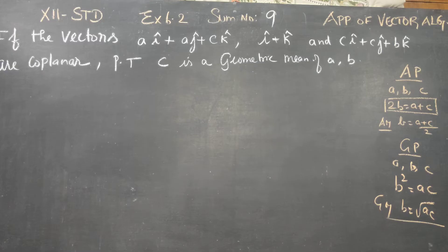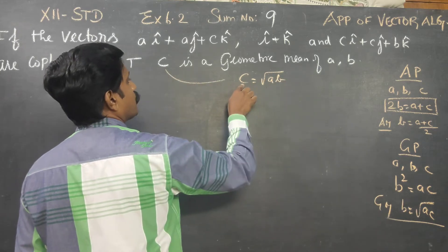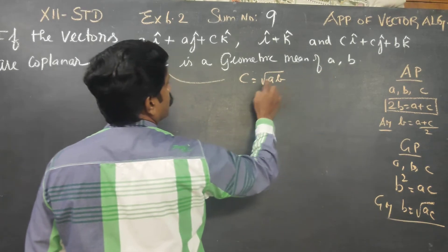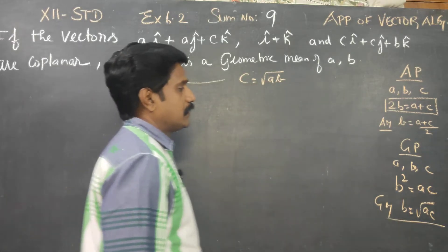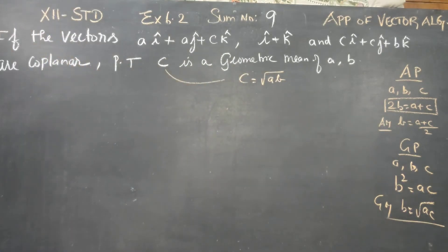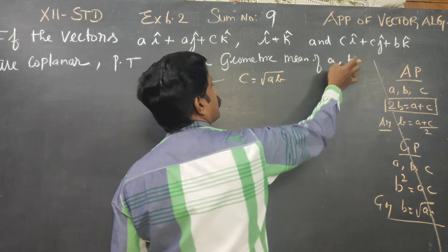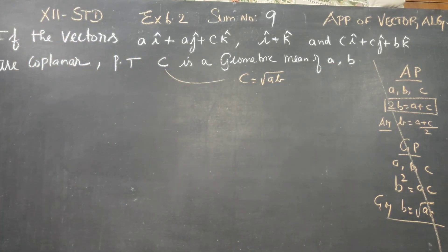C is equal to root of A, B. C is a geometric mean of A, B — meaning C equals the square root of A times B. If A, B, C is a geometric mean of A, B, then C equals root of A times B.